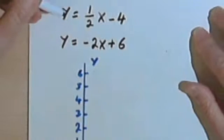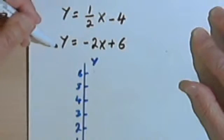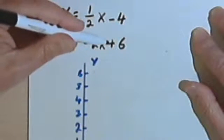We've got these two equations: y equals 1/2 x minus 4, and y equals negative 2x plus 6.